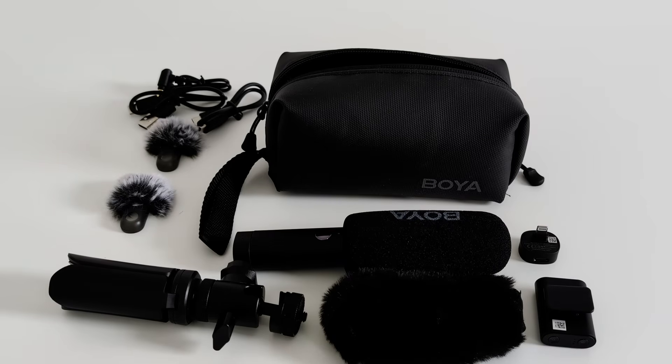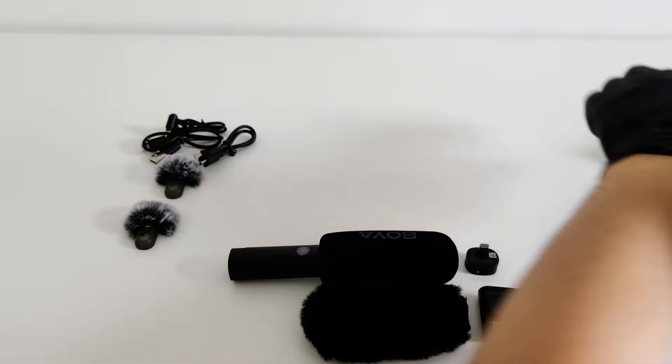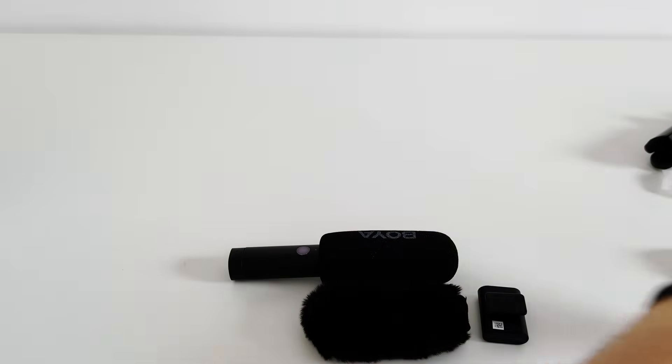We've already seen what this system is capable of in different modes, but let's see what exactly makes it so versatile. Here is the complete kit. It includes everything: the microphones, the case, interchangeable receivers for cameras and smartphones, desktop stands, and the windscreen.